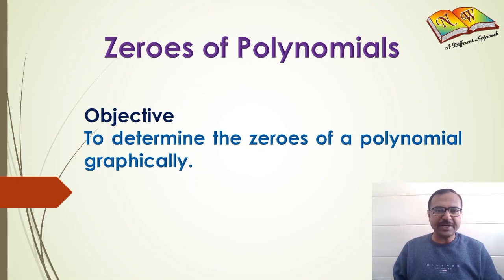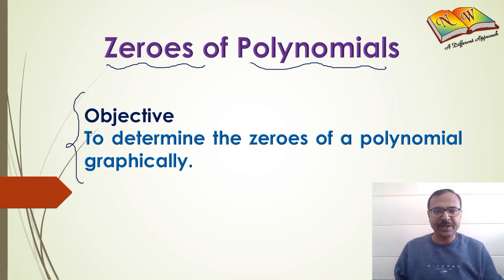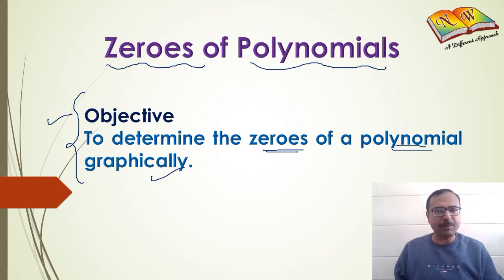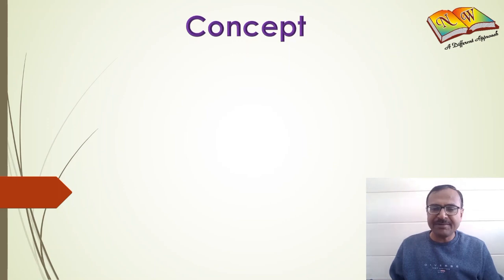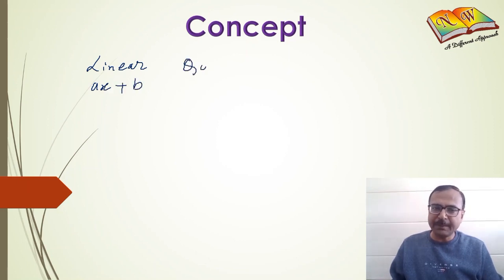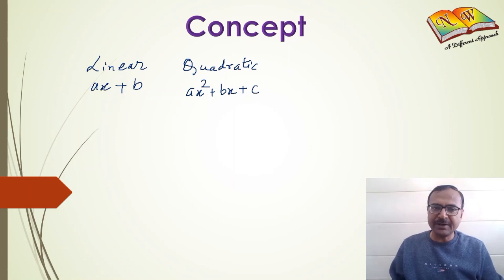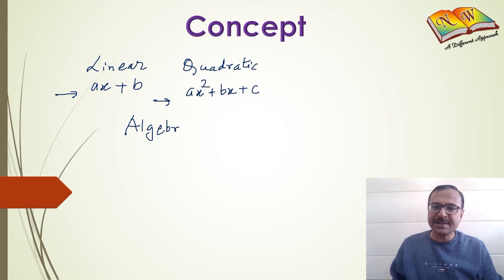In this experiment we will be trying to find the zeros of polynomials experimentally by plotting the graphs. The objective is to determine the zeros of a given polynomial — it may be a linear, a quadratic, or a cubic polynomial — graphically, by plotting the graph. The concept involved is that whenever we have a polynomial, whether it is a linear polynomial in the form ax plus b, a quadratic polynomial in the form ax² plus bx plus c, or a cubic polynomial, we can find the zeros of all these polynomials either algebraically or through the graphical approach.